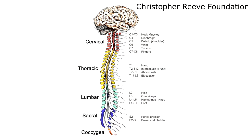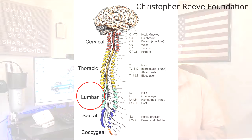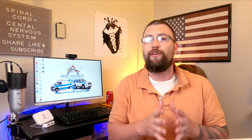The structure as a whole is typically divided into three main regions: the cervical, the thoracic, and the lumbar. However, there are some neurology texts that include a fourth region named the sacral region.